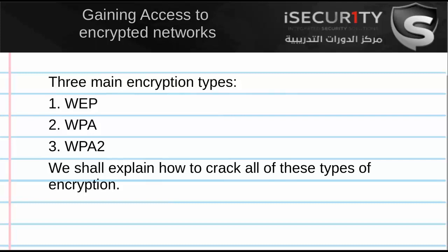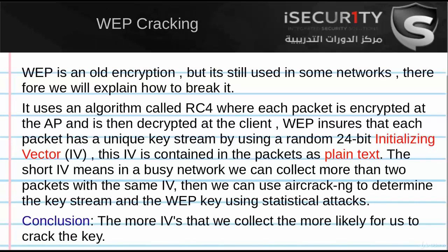The first encryption we're going to talk about breaking is WEP, because it's the oldest and easiest to break. We still need to learn it because you will still see networks that use WEP. WEP uses an algorithm called RC4. Each packet is encrypted at the access point and sent into the air. Since the client has the key, it can decrypt the packet and read the information inside.